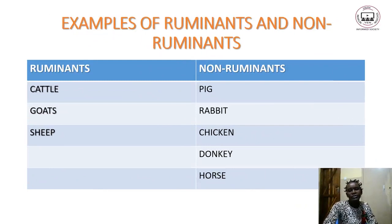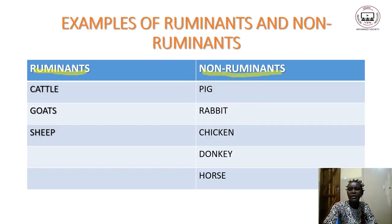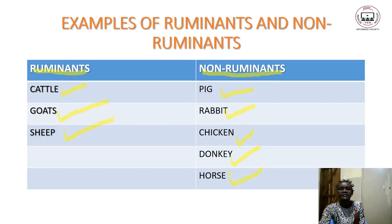Before we go into details on the differences between ruminants and non-ruminants, we should have examples of each. On the table shown here, examples of ruminants include cattle, goats, and sheep, while non-ruminant animals include pig, rabbit, chicken, donkey, horses, etc.